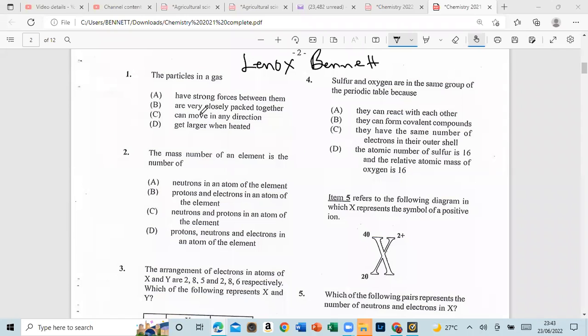All right guys, welcome to the Last Minute Channel. This is going to be a very short video for 2022. Number one, the particles in C can move in any direction. Two, the most number of an element is the number of neutrons and protons in an atom of the element.